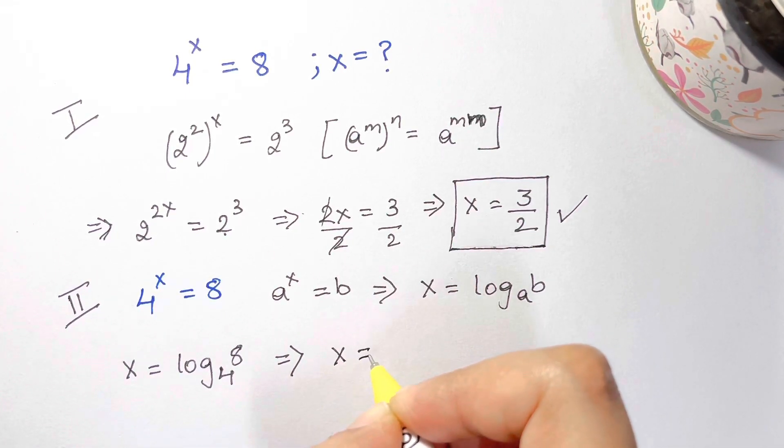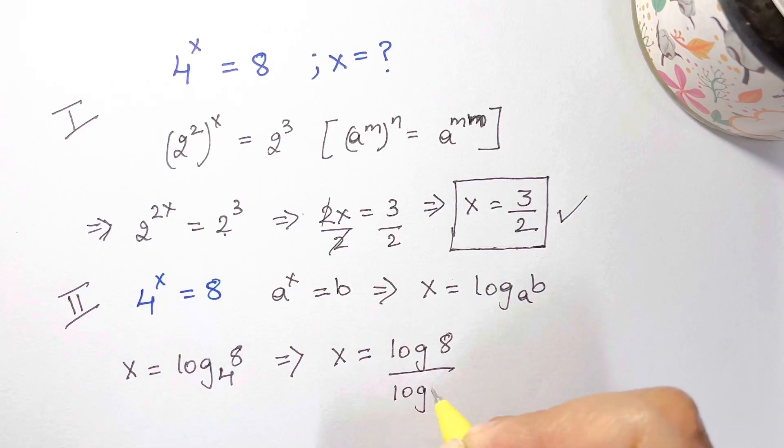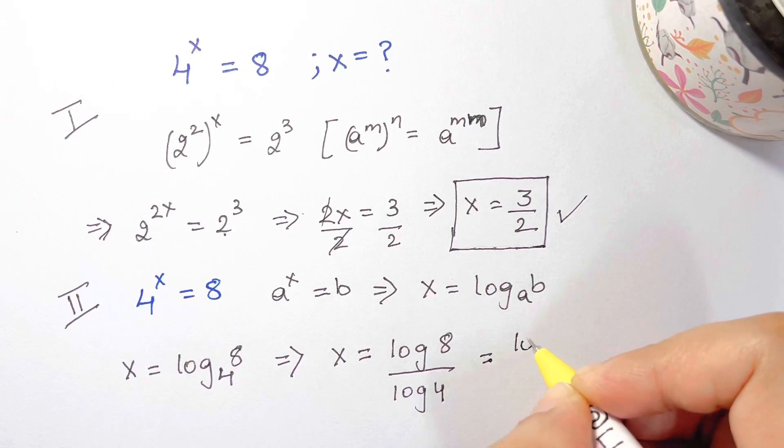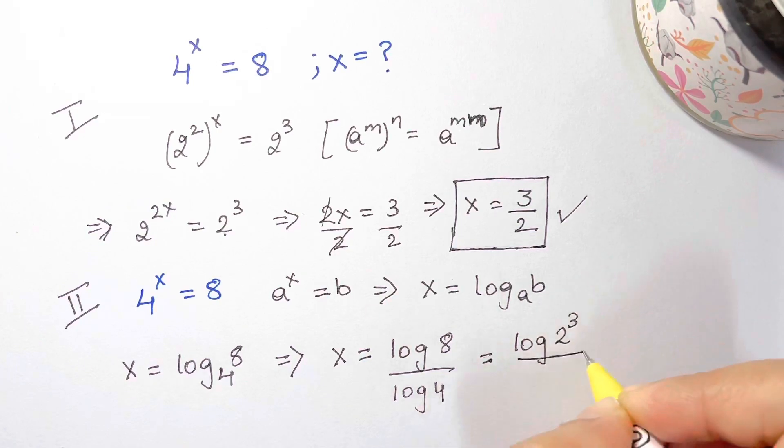And this can be written as x equals log 8 can be written as 2 cube over log of 2 squared.